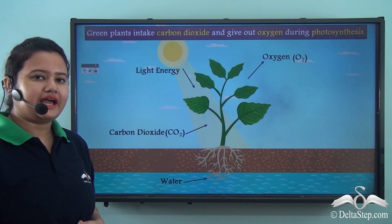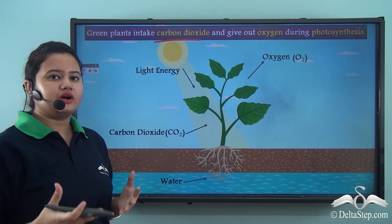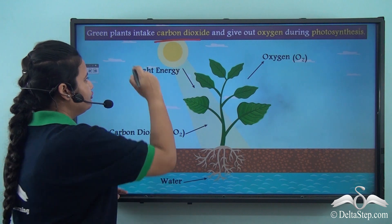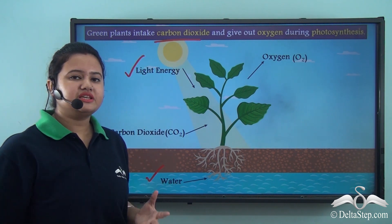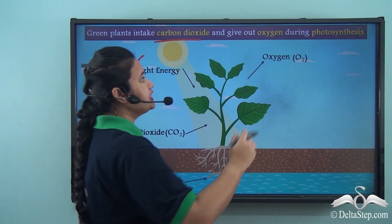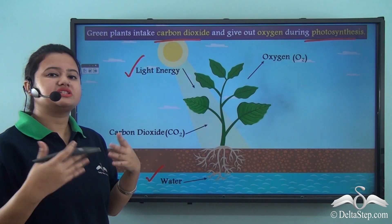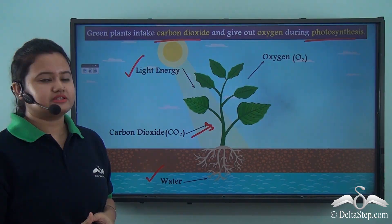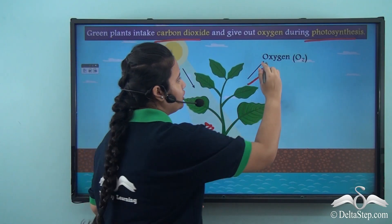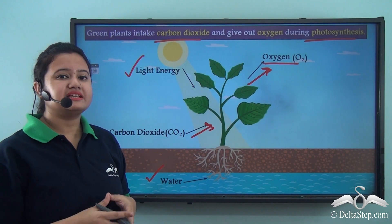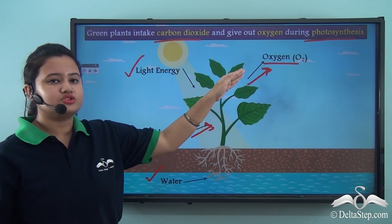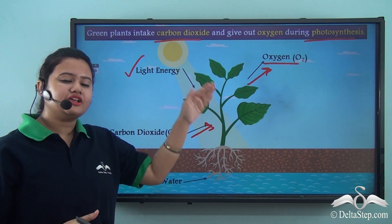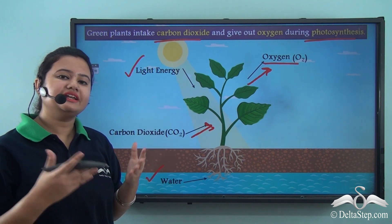Carbon dioxide that we breathe out is eventually utilized by plants in the process of making food with the help of sunlight and water. This process in which plants make food is known as photosynthesis. An important by-product of photosynthesis is oxygen, which is released into the air by plants and then eventually consumed by us. Thus a natural balance between gases is maintained in nature.